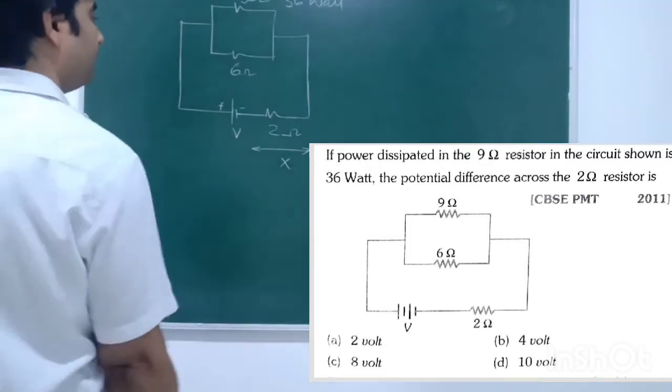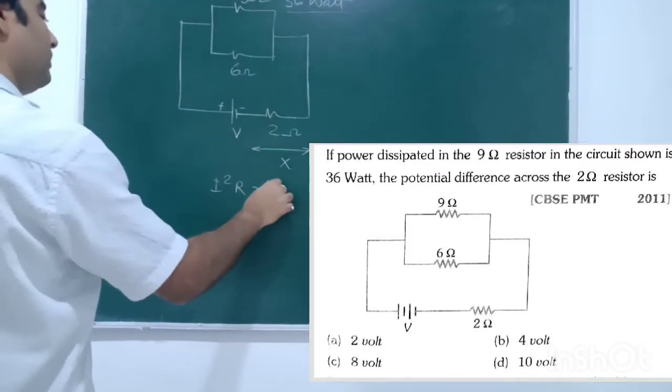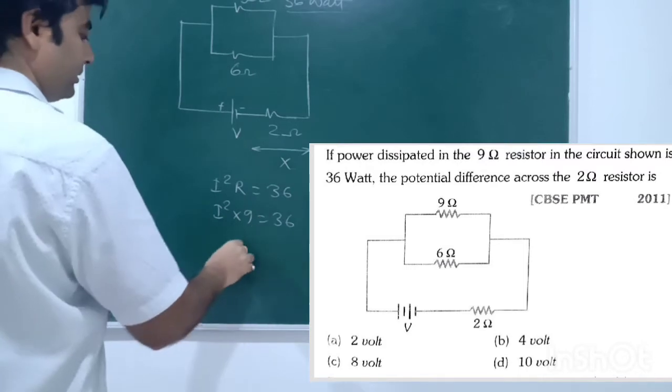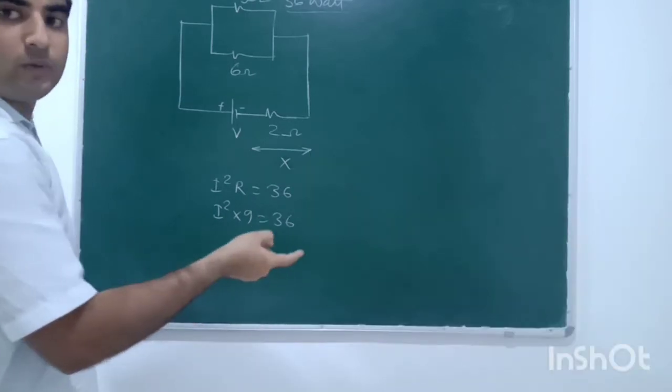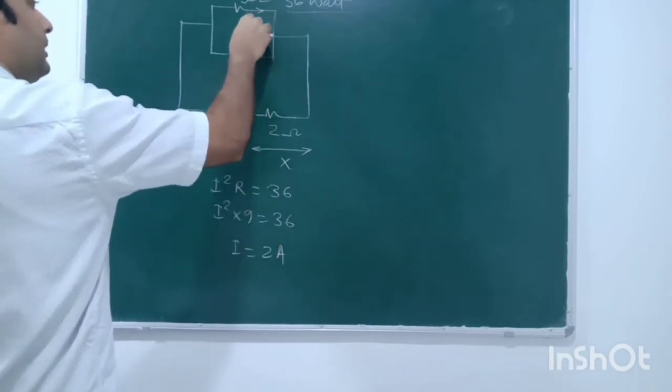Suppose this is x. So, this is 36W. It means i²r is equal to 36. i² into 9 is equal to 36. So, current is basically root over 4 which is 2A. So, this is 2A.